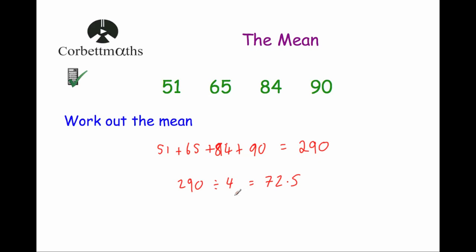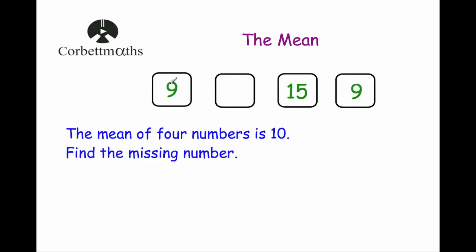So to work out the mean for a list of numbers, you just add up the numbers and then divide by the number of numbers that there are. Now we're going to look at a question that's a little bit different. This time we've been given 9, 15 and 9, and there's a missing number. The mean of these four numbers is equal to 10, and the question says work out the missing number. We've been told the mean for the four numbers is 10, so whenever we've added up these four numbers and divided by 4, we've got a mean of 10.